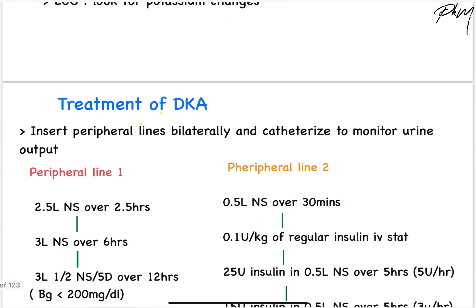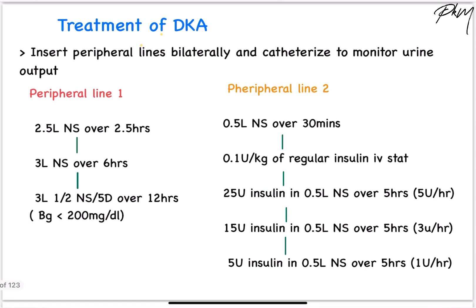Next we come to the management of DKA. Once DKA has been diagnosed, insert peripheral lines bilaterally and catheterize the patient to monitor urine output. To start with, give 500 mL normal saline on both line 1 and line 2 over 30 minutes. On peripheral line 1, continue to give normal saline 2 litres over 2 hours — that is 0.5 and 2 litres, so 2.5 litres over 2.5 hours.